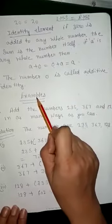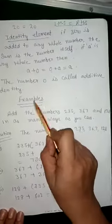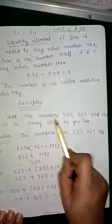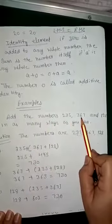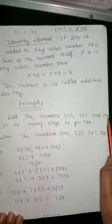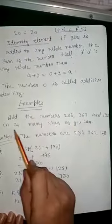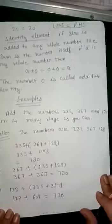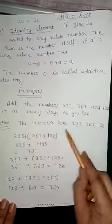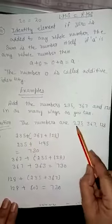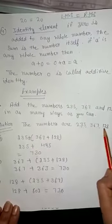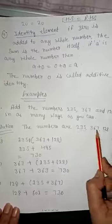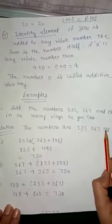Now we will discuss examples. Example 1: Add the numbers 235, 367, and 128 in as many ways as you can. Solution: The numbers are 235 (first number), 367 (second number), and 128 (third number).